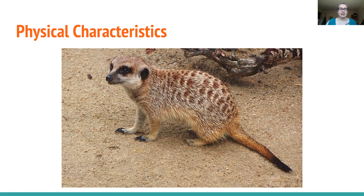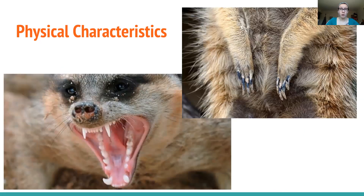Their eyes are pretty big in relation to the size of their head — about 20% of their skull is taken up by their eye sockets, which I thought was very interesting. Because they're carnivores, they also have pretty sharp teeth — about 36 teeth with some sharp canines. They need to be adapted for the food they're eating, and just like dogs or cats, they have sharp teeth for tearing into prey.